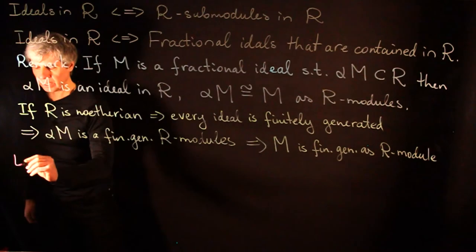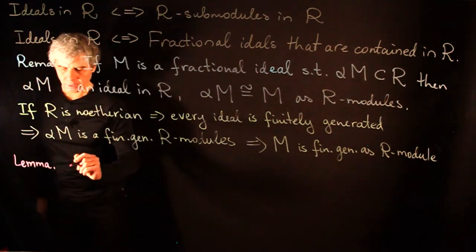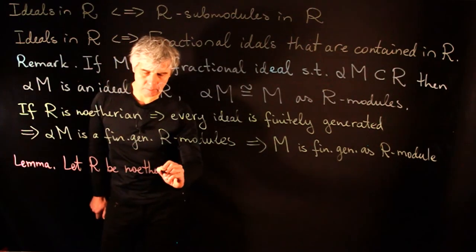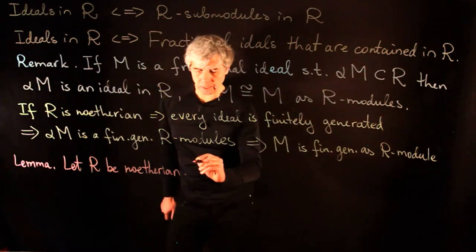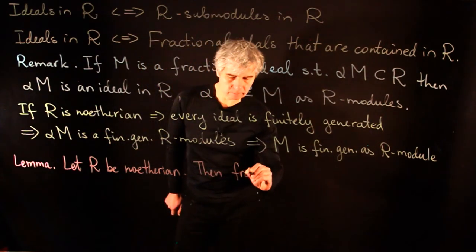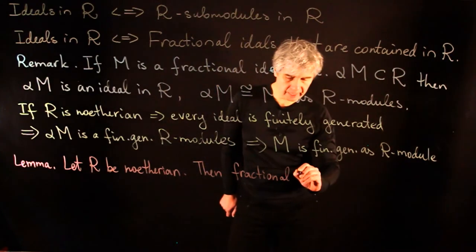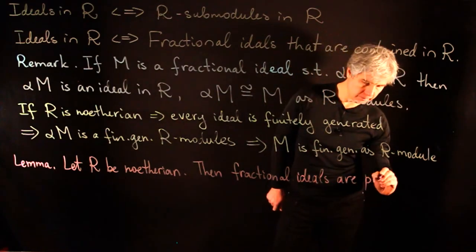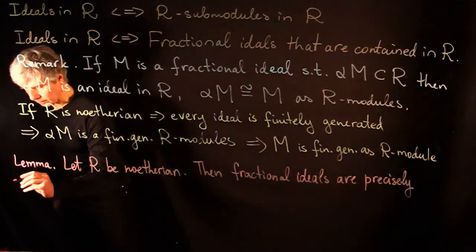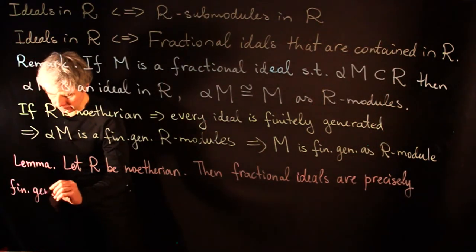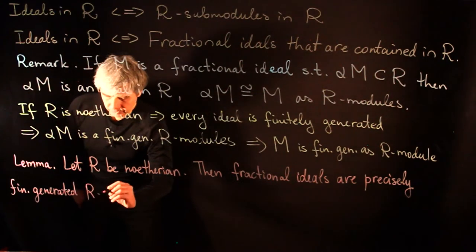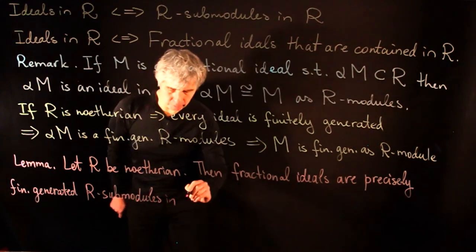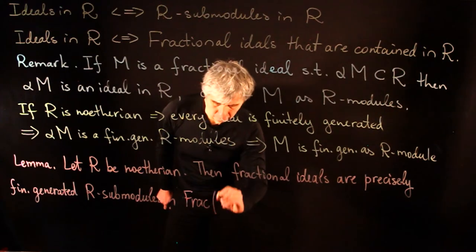And we get the following lemma: let R be Noetherian. Then fractional ideals are precisely finitely generated R-submodules in the field of fractions of R.